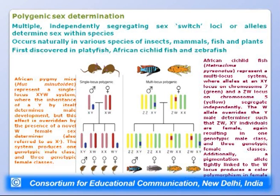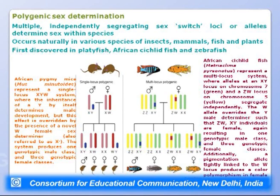Multi-locus polygenic sex determination is found in African cichlid fish, with alleles at an XY locus on chromosome 7 and a ZW locus on chromosome 5 segregating independently. The W allele overrides the Y male-determiner such that ZW/XY individuals are female, again resulting in one genotypic male class and three genotypic female classes, with a pigmentation allele tightly linked to the W locus producing color polymorphism in female offspring.